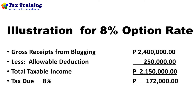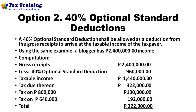Here is the illustration for the eight percent option rate. A blogger has gross receipts from blogging of two million four hundred thousand pesos for the year. Since the blogger opted for the eight percent option rate, the allowable deduction is two hundred fifty thousand — the amount which is taxable at zero percent. Deducting 250,000 from 2,400,000 gives a taxable income of two million one hundred fifty thousand. The tax due at eight percent is one hundred seventy-two thousand, representing both income tax and percentage tax.